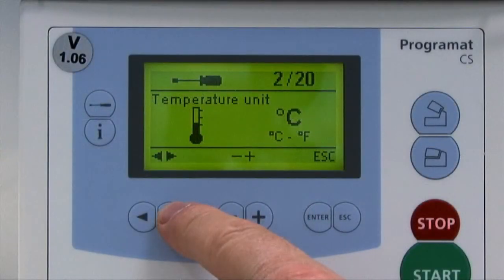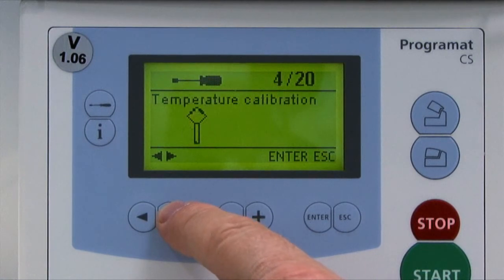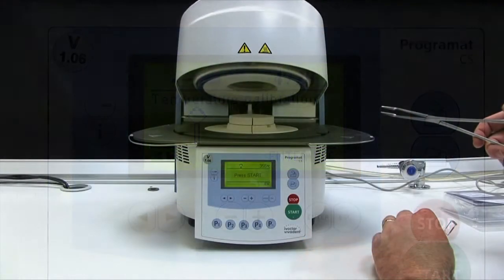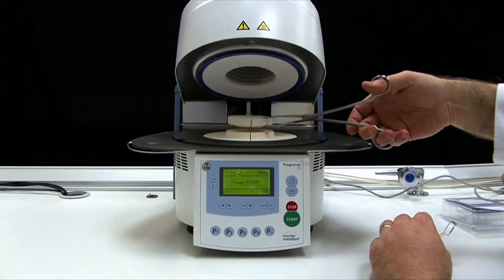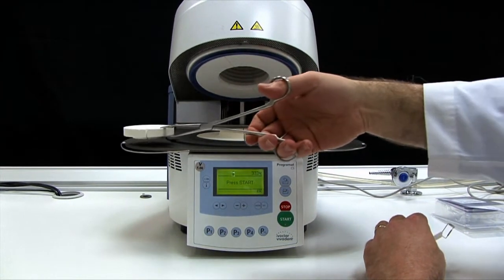To calibrate the program at CS, begin by selecting the calibration program. Remove the firing plate from the furnace using the furnace tongs and place it on the cooling rack.